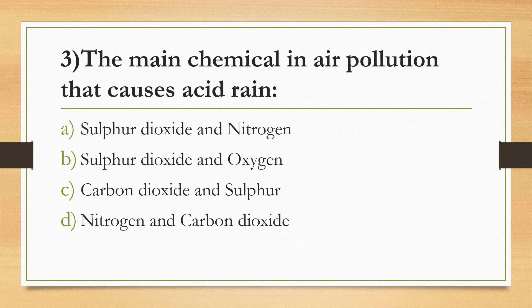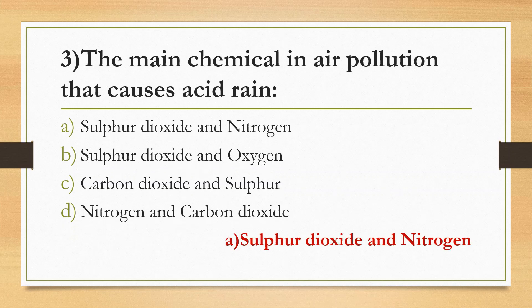Third Question: The main chemicals in air pollution that cause acid rain — Option A: Sulfur dioxide and nitrogen, Option B: Sulfur dioxide and oxygen, Option C: Carbon dioxide and sulfur, Option D: Nitrogen and carbon dioxide. Answer is Option A: Sulfur dioxide and nitrogen. These chemicals rise to high positions in the atmosphere, where they mix and react with water, oxygen, and other chemicals to form acidic pollutants known as acid rain.